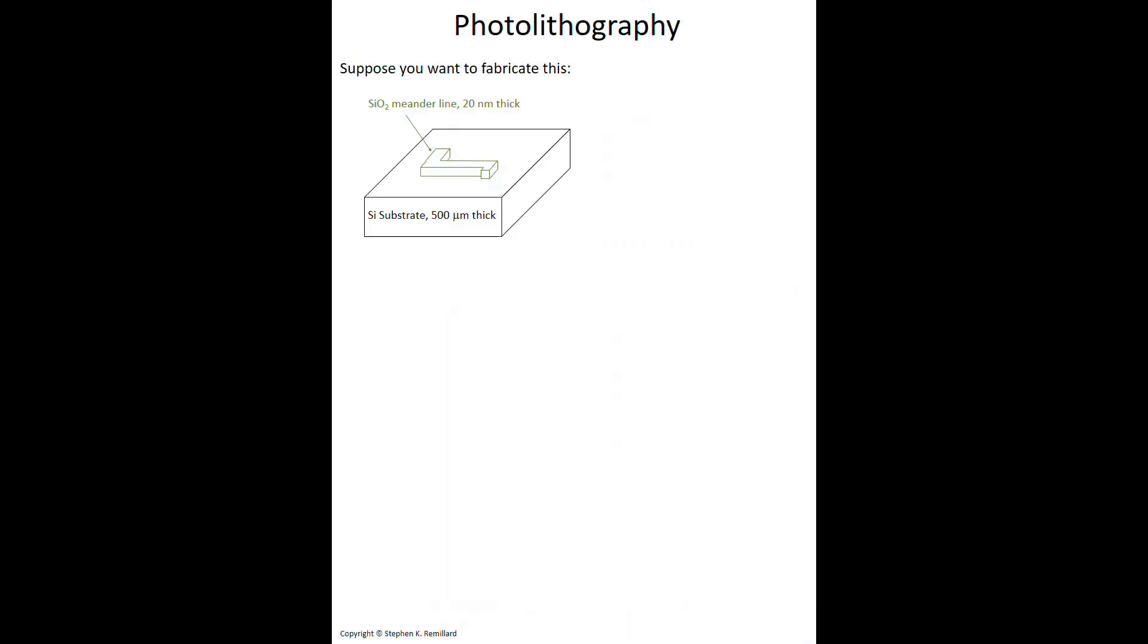Suppose you want to make one of these. I have a silicon substrate, it's half a millimeter thick. I won't go through the dicing procedure. We're just going to focus on the question of how do you get this. So I want to make this feature: a silicon dioxide meander line, 20 nanometers thick, that looks like that. That's all I want on my piece of silicon. How do I make that happen? I have six basic steps here. There are lots of steps in between, and they can be broken down into lots of steps, but we're going to go through six steps.